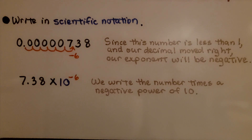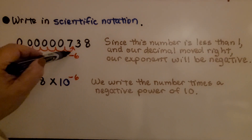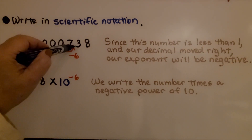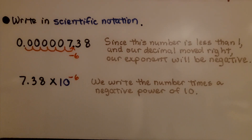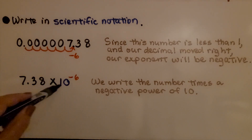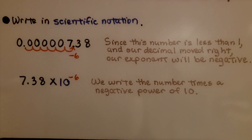Here we're writing a very small number in scientific notation. Here's our decimal point. We count 1, 2, 3, 4, 5, 6 hops to get the decimal point between the 7 and the 3. Since the number is less than 1 and our decimal moved right, our exponent will be negative 6. We write the number times a negative power of 10: 7.38 times 10 to the negative 6th power — 7 and 38 hundredths times 10 to the negative 6th power.